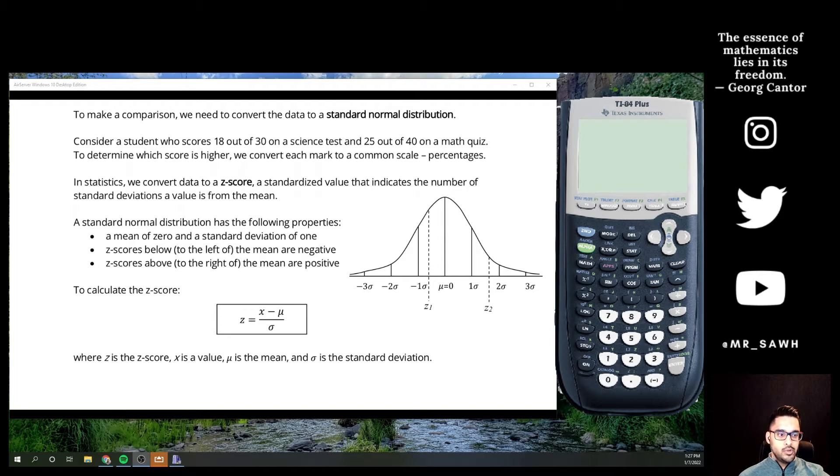So consider somebody who scored 18 out of 30 on a science test but 25 out of 40 on a math quiz. Using the fractions isn't necessarily the best option because they're out of different totals. So to actually determine which score is the higher one, we would convert to a common scale. But in statistics we convert to something called the z-score, and all it really is is a standardized value that indicates the number of standard deviations that we are from the mean.